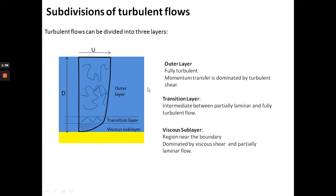In the top part we have an outer layer where current speed is generally uniform and fully turbulent — momentum transfer is dominated by turbulence. Then there is a transition layer, intermediate between partially laminar and fully turbulent flow with less mixing. In the lowermost part near the bed we have a viscous sub-layer where flow is dominated by viscous forces and partially laminar flow. The velocity gradient here is very similar to what you get in laminar flow — current speed increases away from the bed.